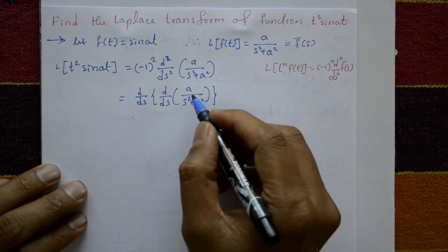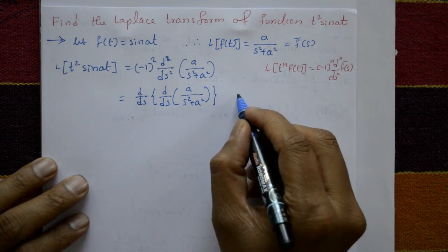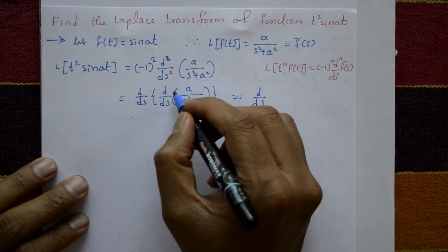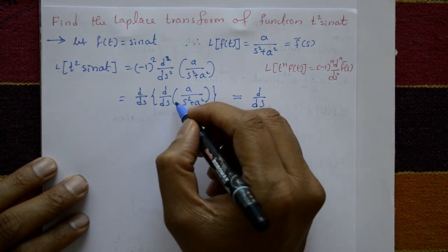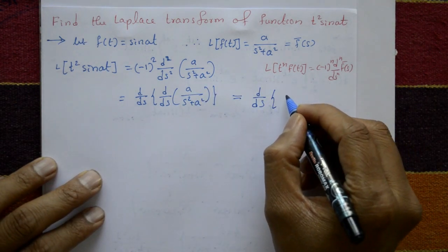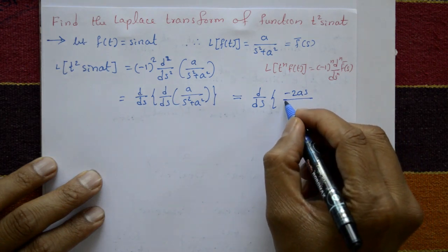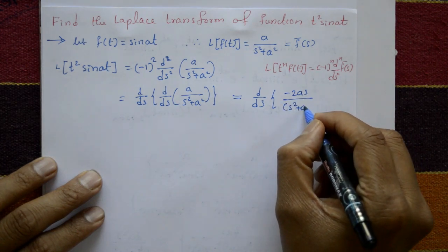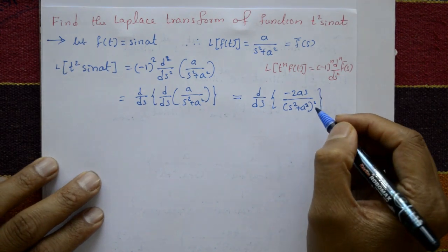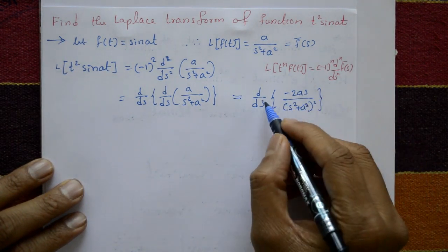Now differentiate a over s² plus a² with respect to s. Using the quotient rule (u over v form), the first differentiation gives minus 2as divided by s² plus a² whole squared. Then apply d over ds again, differentiating this result once more with respect to s using the quotient rule.